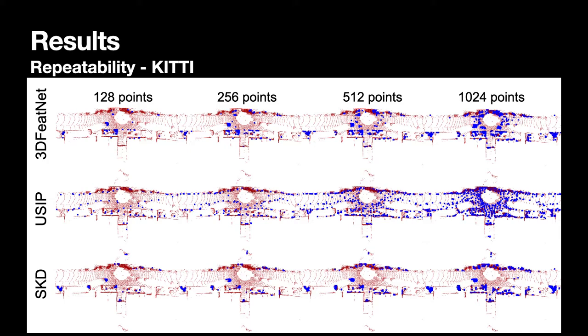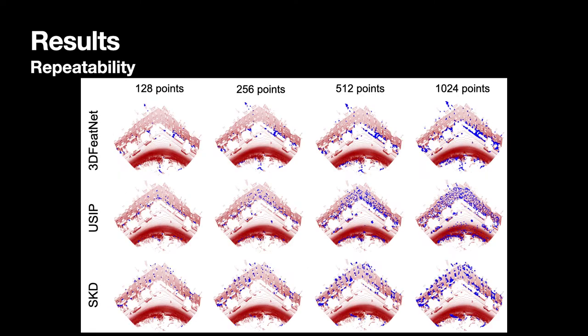Next, let's look at an example from the Oxford RobotCar dataset that contains even more structure. Here, you can see an example of the keypoints extracted from a point cloud from the Oxford RobotCar dataset. You can see that the keypoints extracted by SKD are mostly in areas of the window corners or edges.